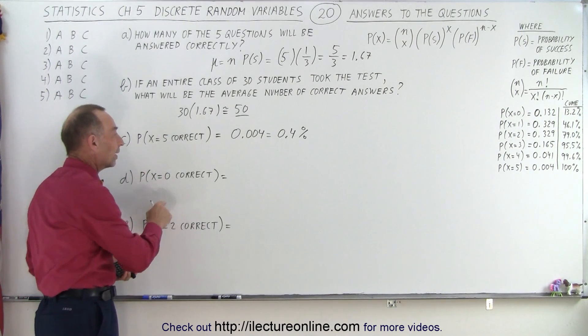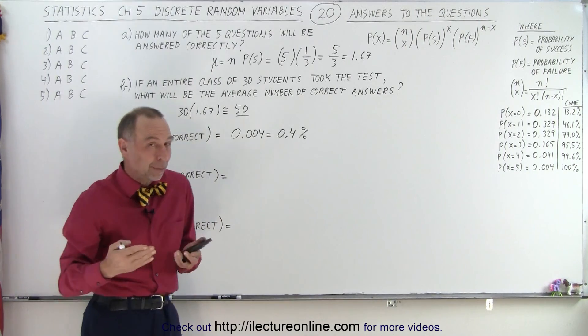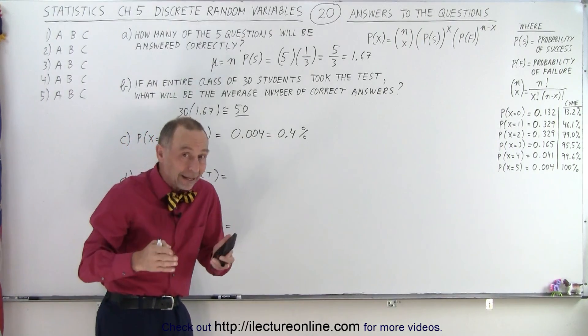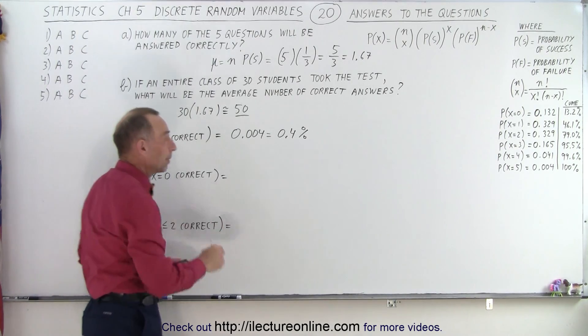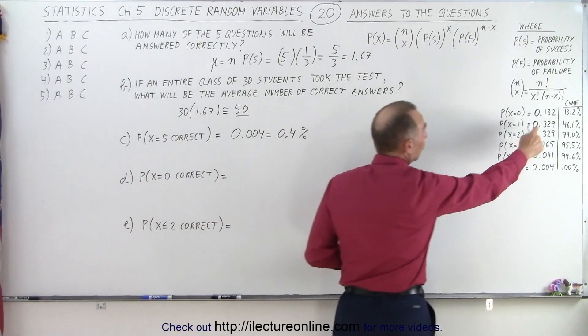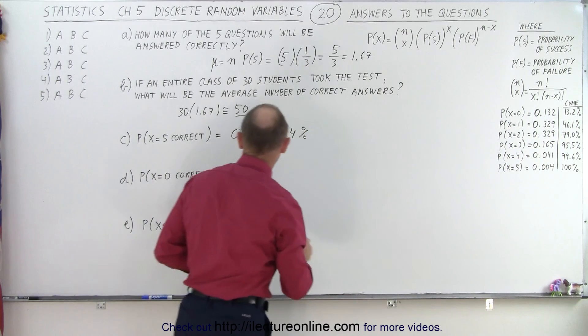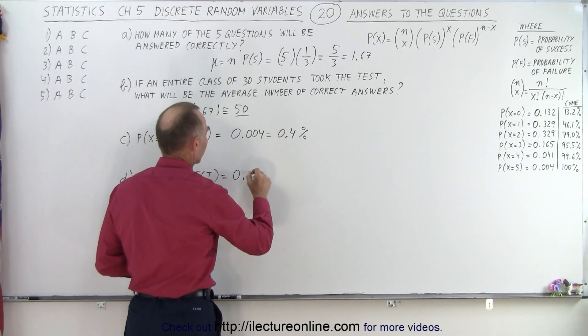What is the probability of getting 0 correct? Now it turns out since the probability of getting them incorrect is higher than the probability of getting them correct, this would be a higher probability. And sure enough, notice it's 0.132. So that would be equal to 0.132.